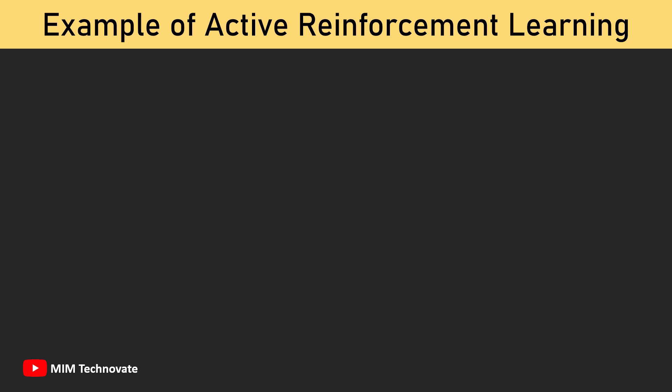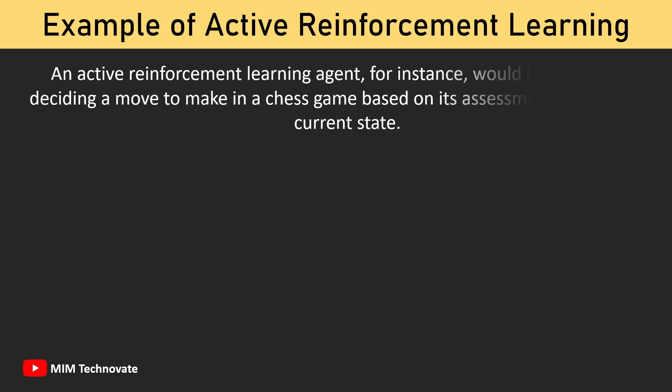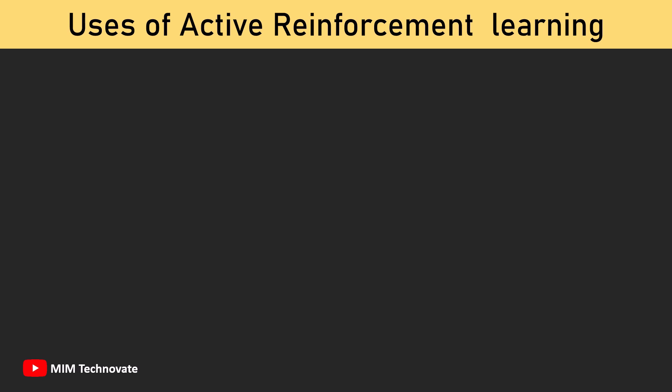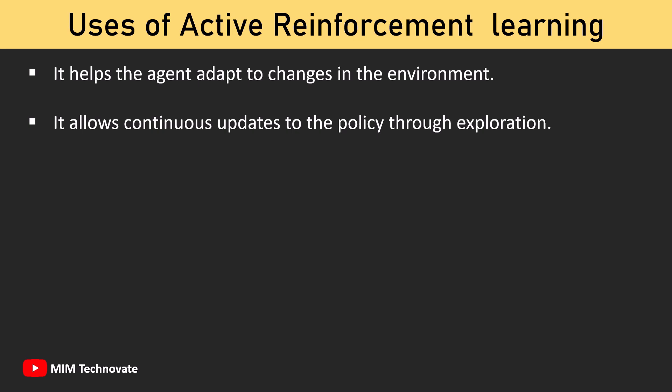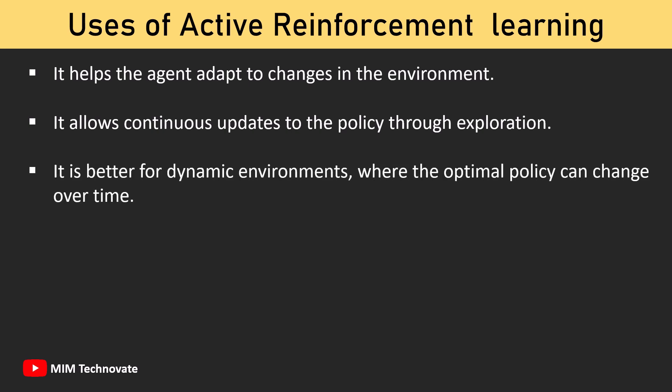An example of Active Reinforcement Learning: an active reinforcement learning agent would be in charge of deciding a move to make in a chess game based on its assessment of the game's current state. Its uses include helping the agent adapt to changes in the environment, allowing continuous updates to the policy through exploration, and being better suited for dynamic environments where the optimal policy can change over time.